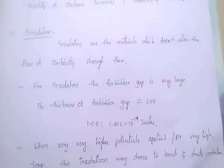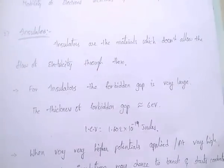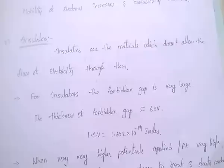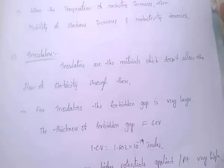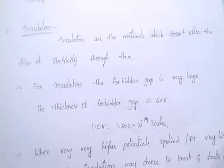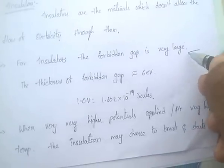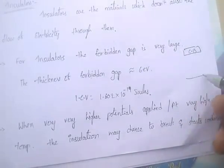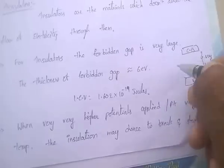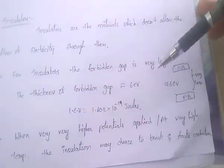Second type of material: insulators. Insulators are materials which do not allow the flow of electricity. For insulators, the forbidden gap is very large — it is about 6 electron volts.